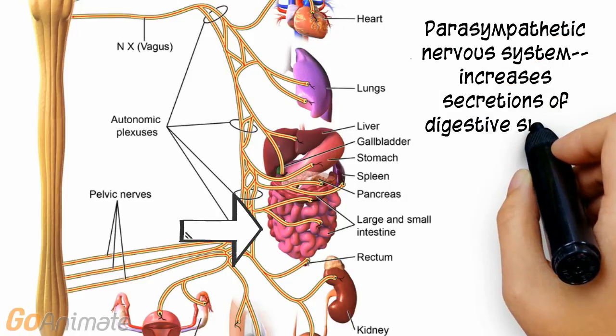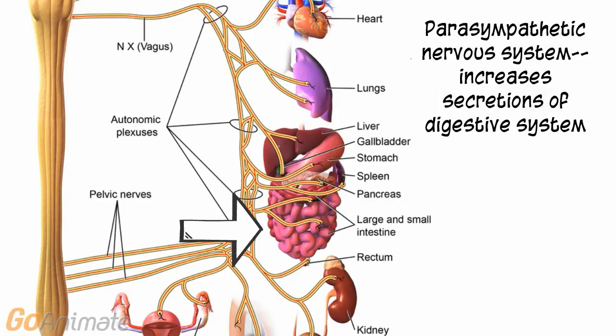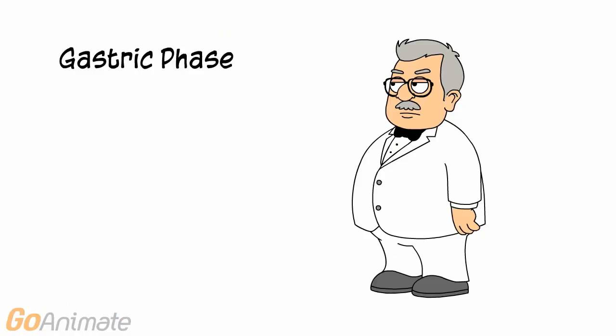The parasympathetic nervous system increases digestion. The next phase of gastric secretions is the gastric phase. In the gastric phase, food entering the stomach promotes digestion.